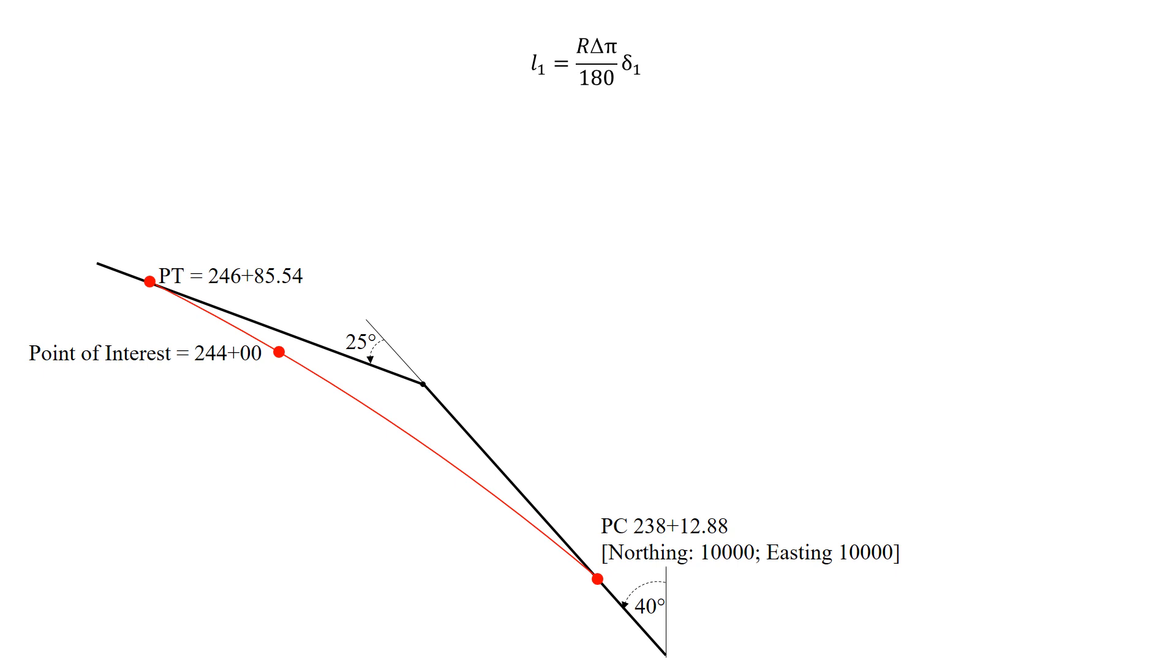We can solve for lowercase L1. And what we're actually going to need to do is rearrange this to solve for lowercase delta 1. And this is going to be the portion of the curve to our point of interest at station 244.